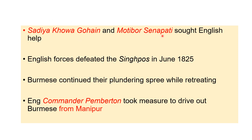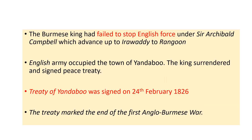The Sadiakhowa Gohain and Motibar Senapati of that region asked the English for help against the Singpho and Burmese. Consequently, the English defeated the Singpho in June 1825, though the Burmese continued their plundering while retreating. English commander Pemberton then took measures to drive the Burmese completely out of Manipur, which was successful.